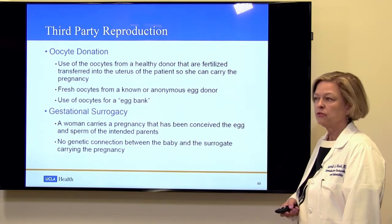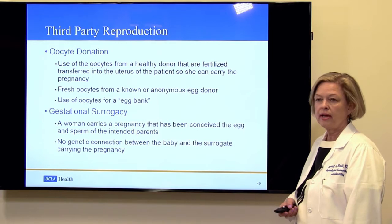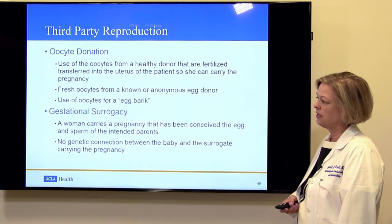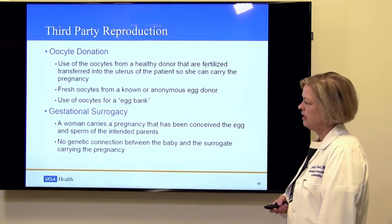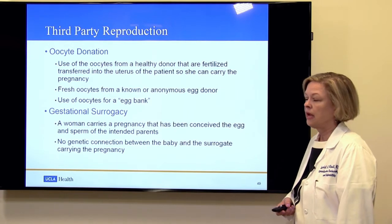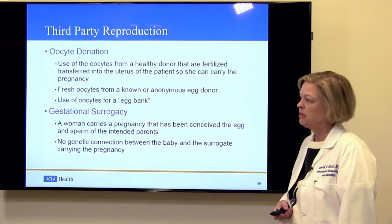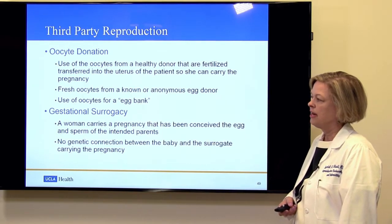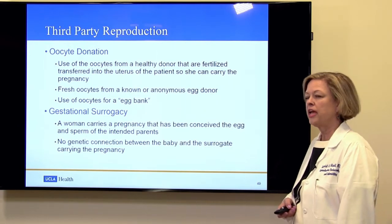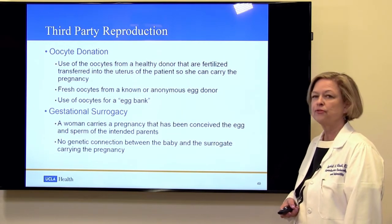More recently, there's been the creation of egg banks, where eggs are frozen similarly to the way sperm is frozen and then sold from the egg bank. Gestational surrogacy is when a woman carries a pregnancy that has been conceived from the eggs and sperm of the intended parents. Sometimes the eggs and/or sperm are not from the intended parents, but the important issue is that the eggs do not come from the gestational surrogate. In those rare cases where the egg does come from the gestational surrogate, that is a classical surrogacy arrangement, and is very rare today.